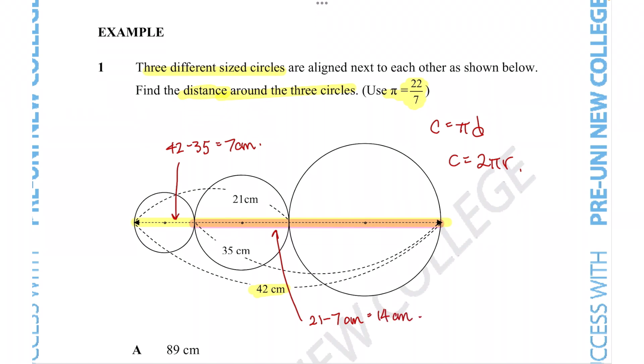Finally, it looks like we can use that information since this line we already know is 35 centimeters, and we know that this line is equal to 14 centimeters. So the final diameter has to be 35 minus 14, giving us 21 centimeters. Okay, so let's label these circles just so we know what we're talking about.